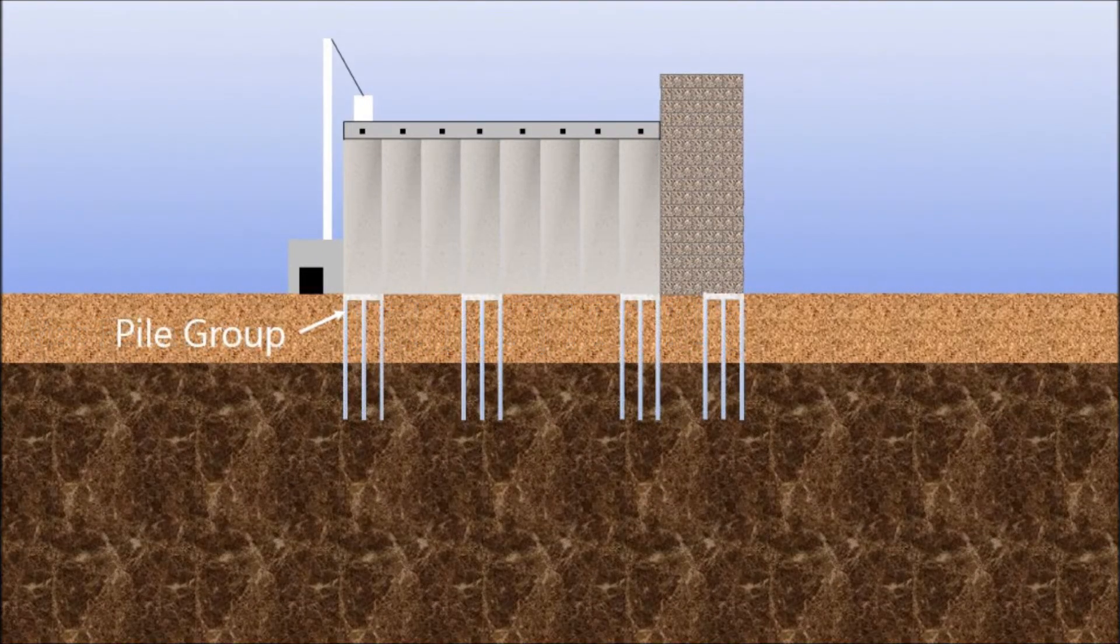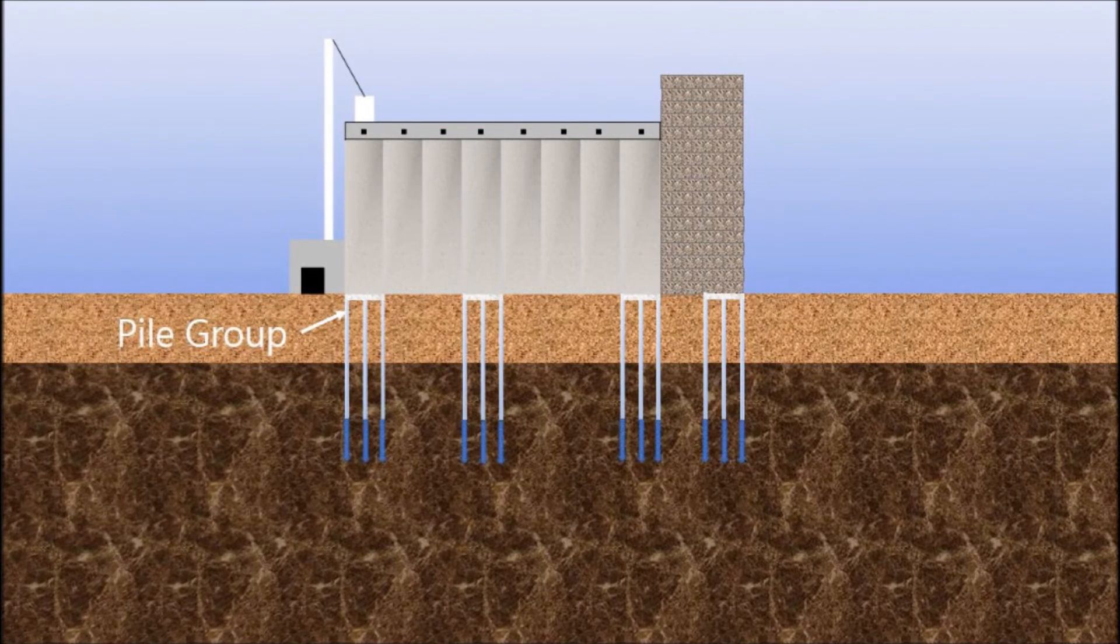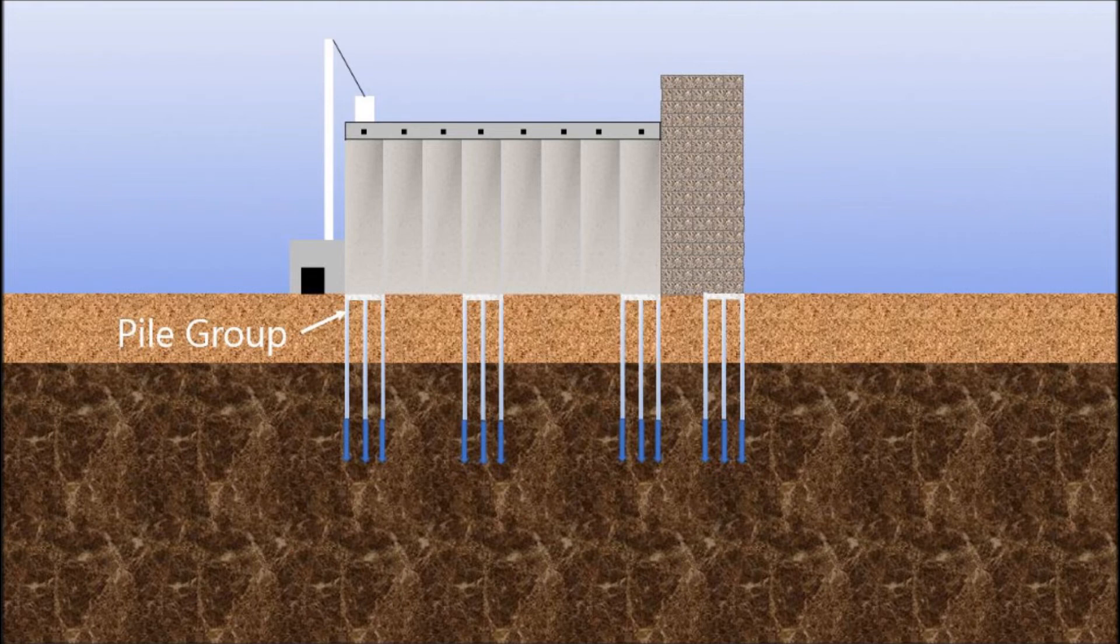Another option is to bypass weak soil layers and transfer loads to stronger layers or even bedrock below. This is accomplished with deep foundations. There are several types of deep foundations which are generally categorized as driven piles, drilled shafts, and auger piles.